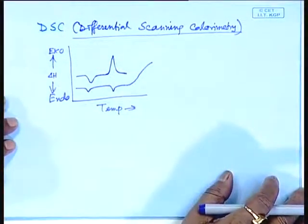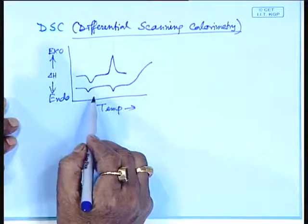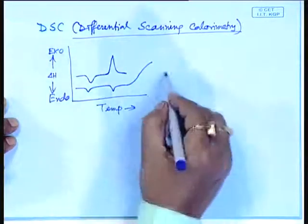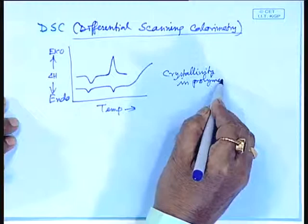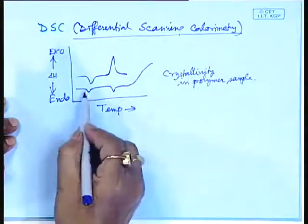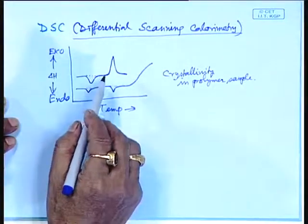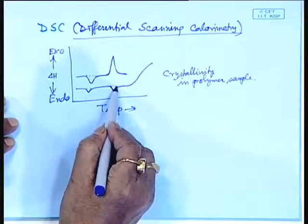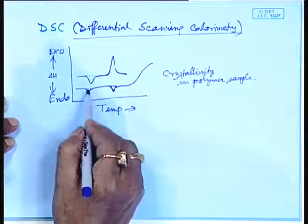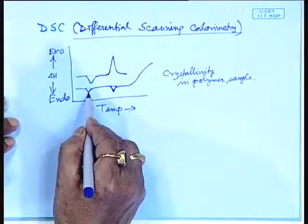Whenever you read the structure — proper characterization of materials — you will know the detail principle of differential scanning calorimetric analysis. This can help in knowing the glass transition, knowing the melting transition temperatures, as well as the crystallinity in a polymer sample. The area under this peak is proportional to crystallinity. If it is the melting peak, crystallinity can be measured from the area under this curve. For Tg, you can get the initial temperature, final temperature, and the peak temperature, reporting these three or only the peak temperature as Tg.